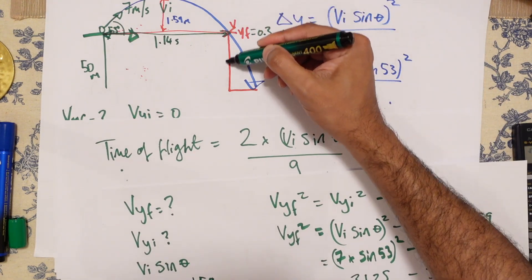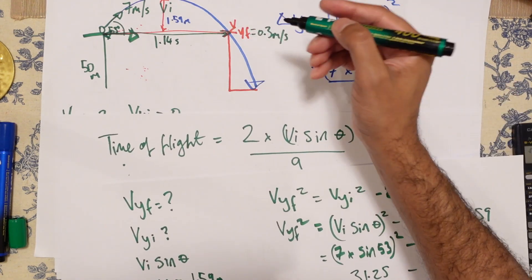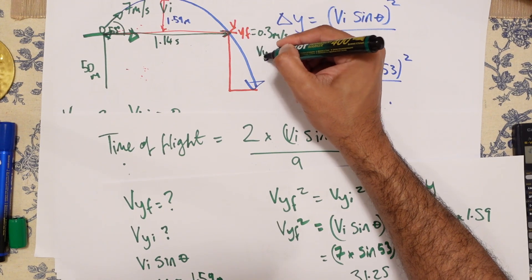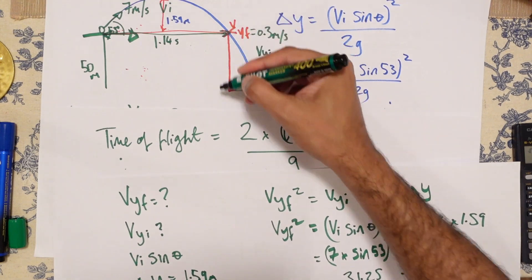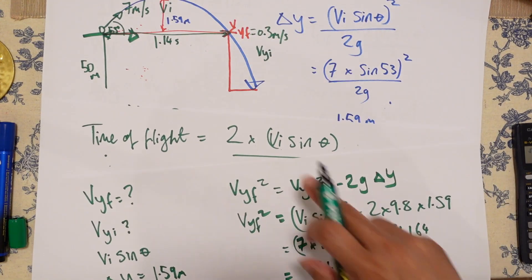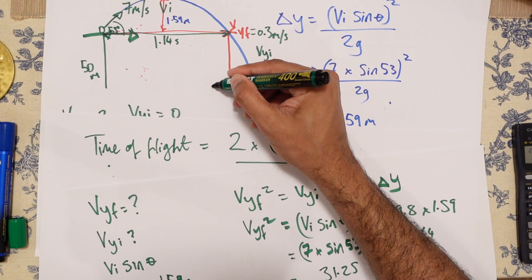And now we've got to work out this. Now this VYF becomes VYI. And that's a crucial bit to work out what that's going to be. But we do know what the VYF down here is.